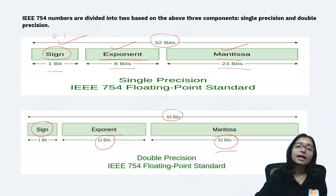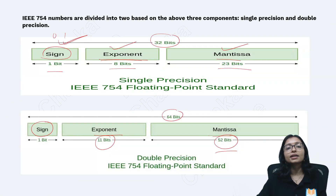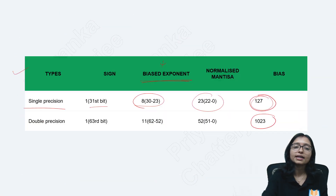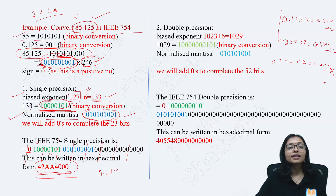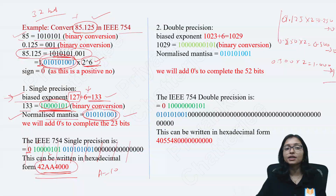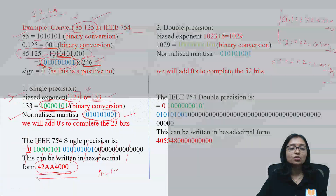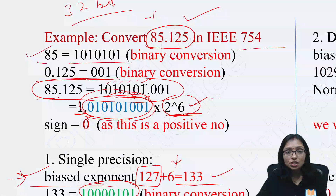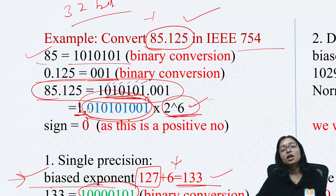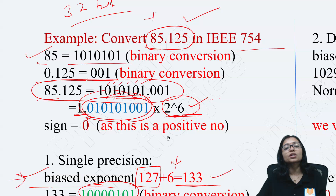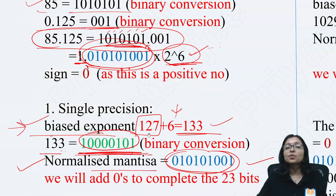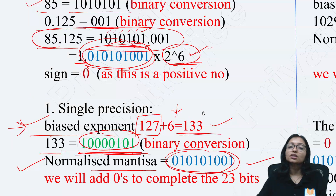See — whenever I am coming to the point, I am shifting the point. The point was here, I am shifting it here. How many bits have I shifted? 6 bits. That is why it is 2 to the power 6. That is why the bias is 127 for single precision, plus 6, giving you 133 here. That is what is happening.